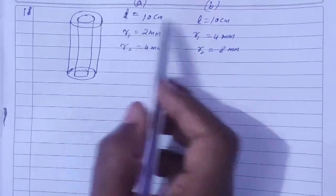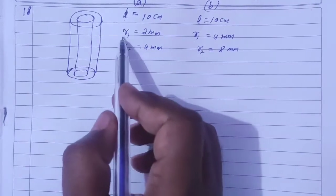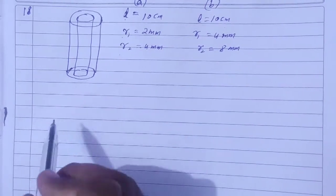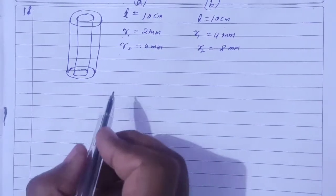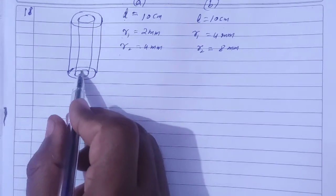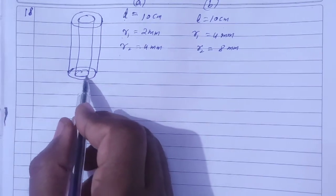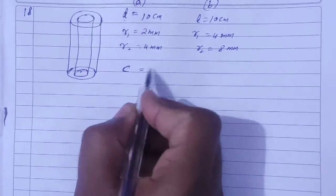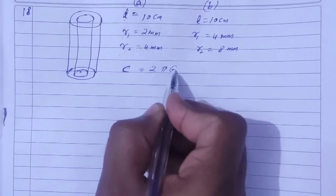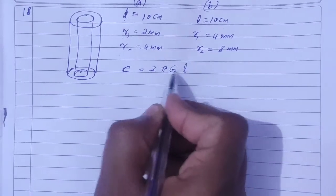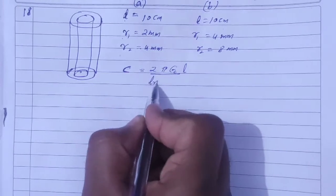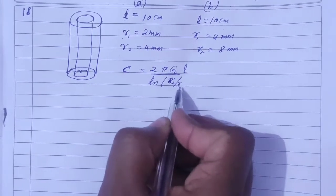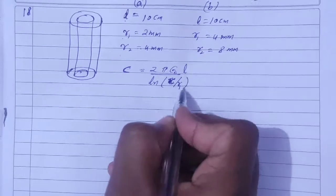We have two capacitors, both of the same length, with inner and outer radii given. To find the capacitance of a cylindrical capacitor, the formula is: C = 2π ε₀ L / ln(R2/R1), where R2 is the outer radius and R1 is the inner radius.